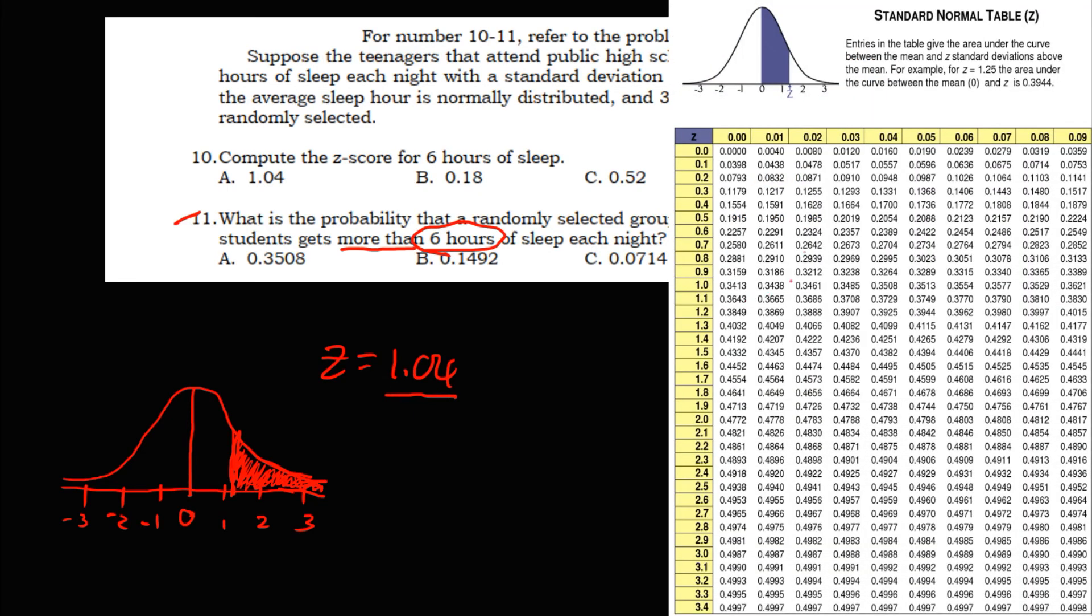Then from this Z-table, take note that this area between the mean and the Z-score, so this is the mean, and this is the Z-score. Therefore, we're looking for this area, that's 1.04. So to find the area of this 1.04, we have 1.0, then this 0.04. Then you connect to find the area. So the area is 0.3508.